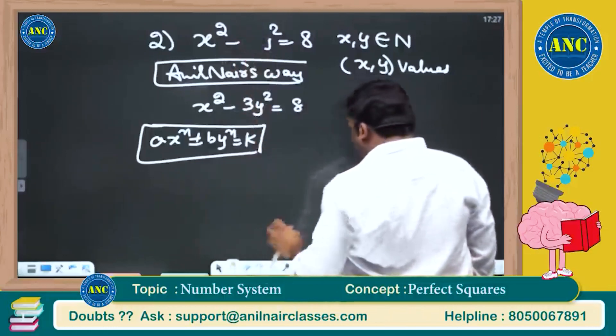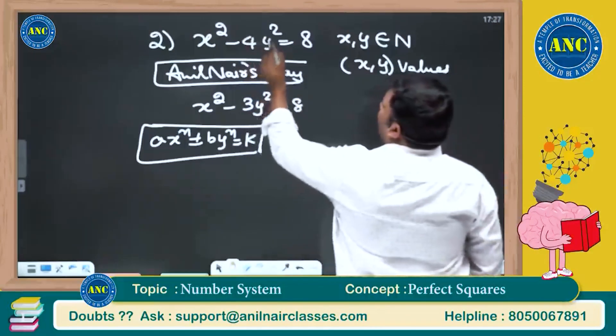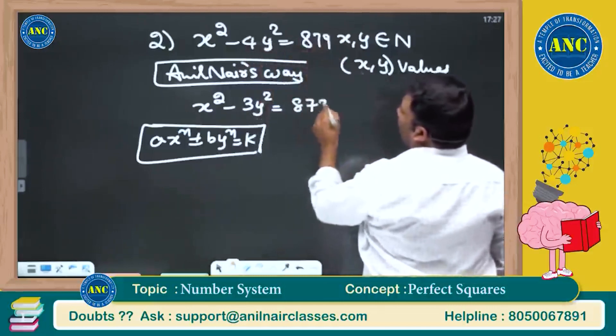Replace this 3, write it down as 4, then we will do it with 3. x square minus 4y square equivalent to 879.